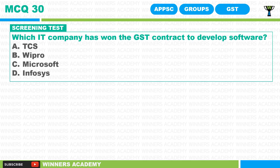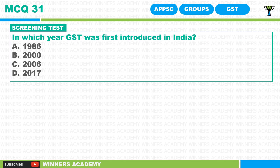MCQ 30: Which IT company won the GST contract to develop the GST software — TCS, Wipro, Microsoft, or Infosys? MCQ 31: In which year was GST first introduced in India — 1986, 2000, 2006, or 2017?